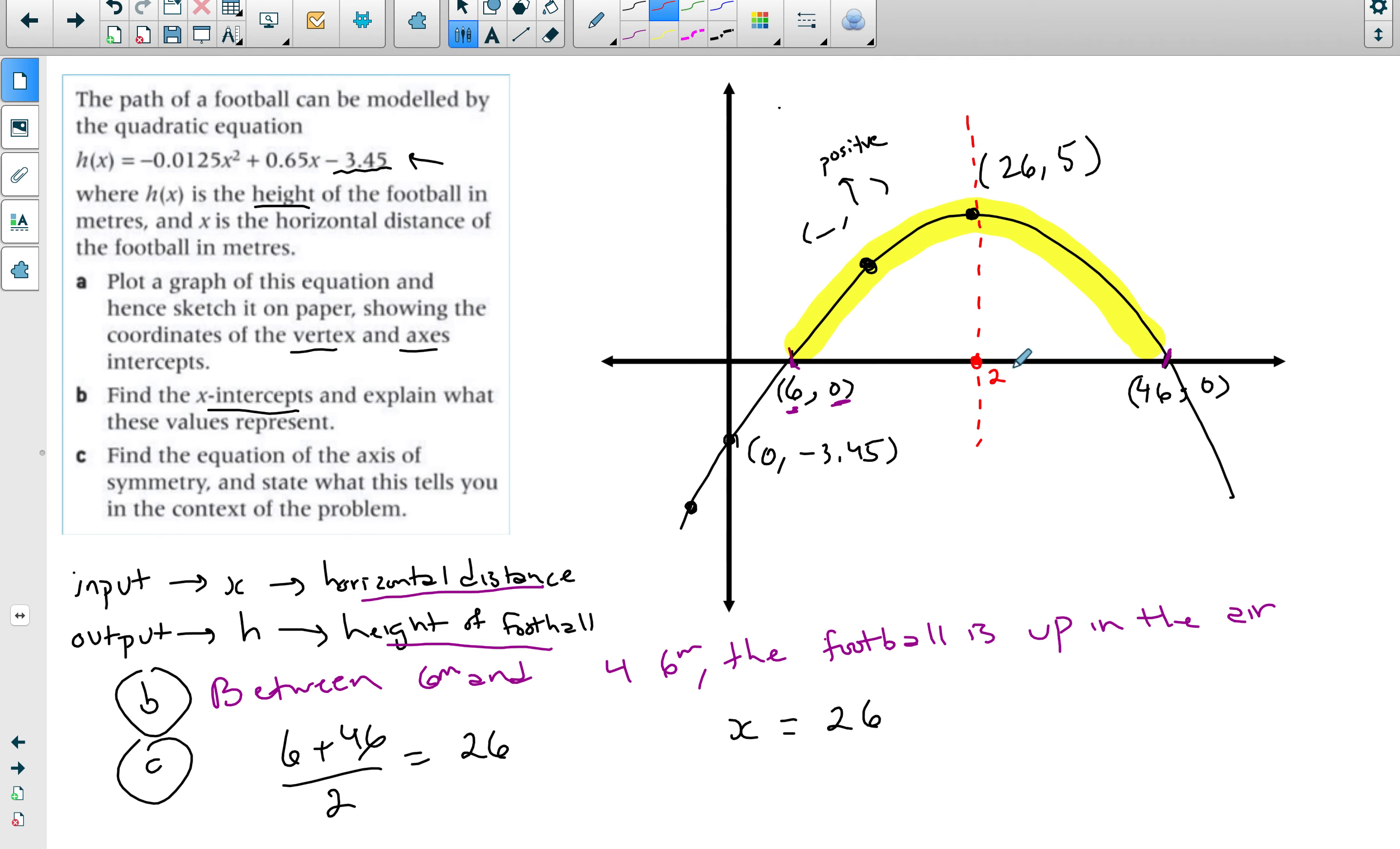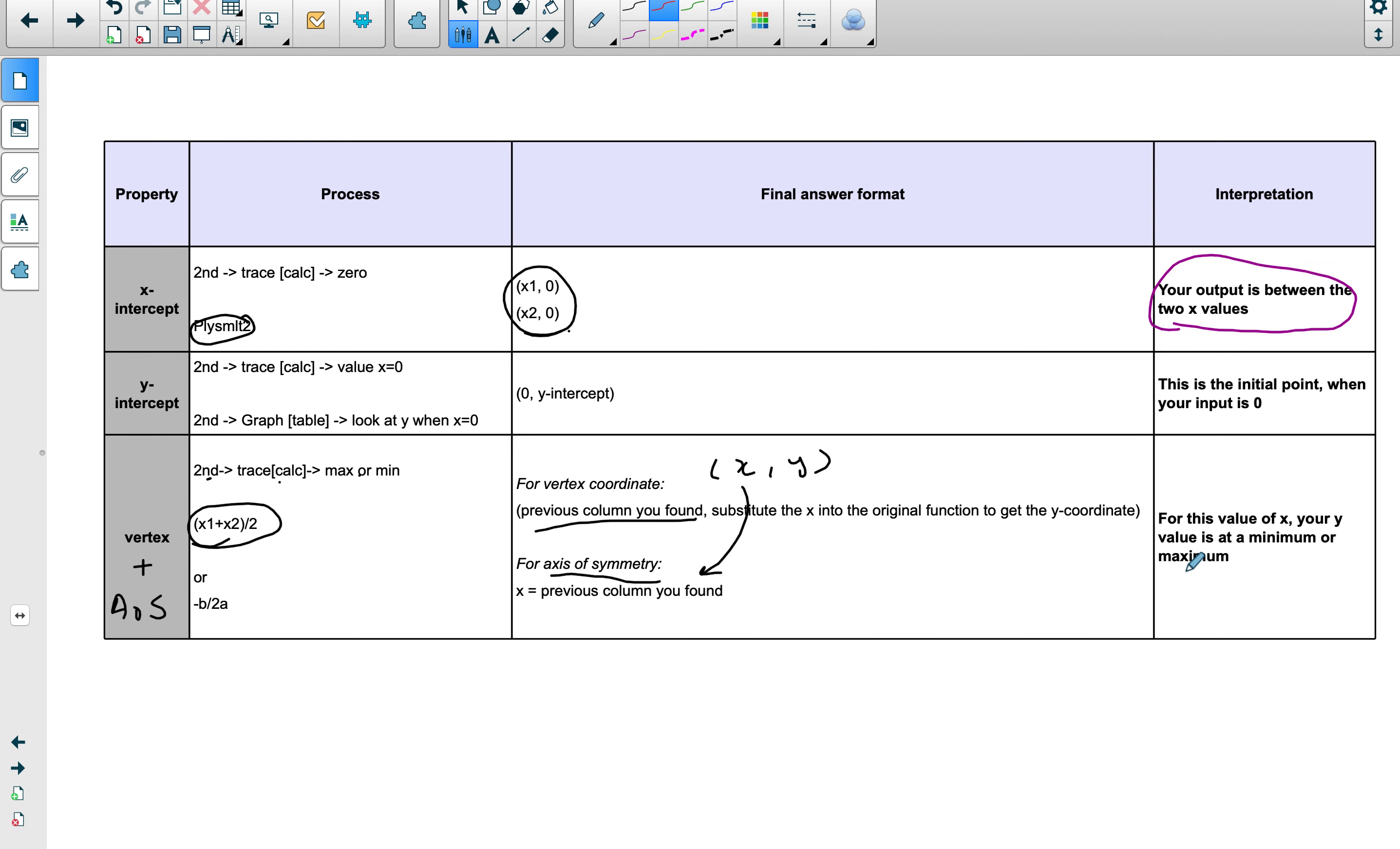Now what happens with the axis of symmetry and the graph itself? Notice that they intersect exactly at the vertex which is the maximum point. So in terms of how do you interpret it? For this x value, we found that it's precisely 26. For this x value your y is at the minimum or the maximum. So let's interpret it with our question.